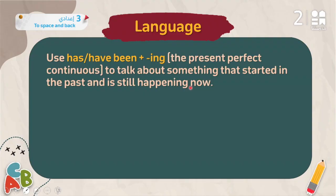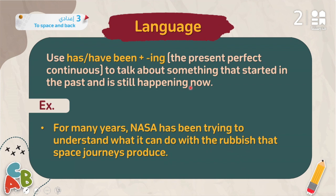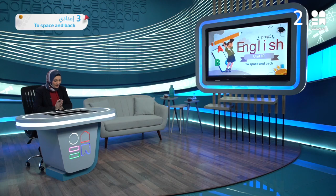The present perfect continuous always involves '-ing' on the verb. The structure is: have/has + been + verb+ing, to talk about something that started in the past and is still happening now. For example: 'For many years NASA has been trying to understand what it can do with rubbish' — meaning NASA started trying and is still trying to understand what to do with space rubbish.